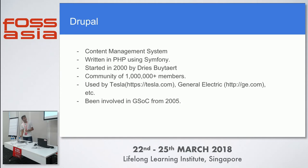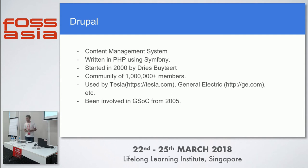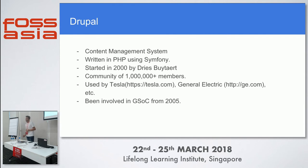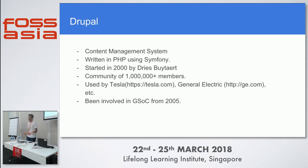Drupal is a content management system started around 2000 by Dries. It was originally written in plain PHP but has since shifted to using Symfony as its core. It has more than one million members and is used by Tesla, General Electric, and various top corporations. Drupal has been participating in Google Summer of Code since 2005 — this would be its 13th edition. Notably, the White House government was using Drupal CMS until the Trump administration changed to WordPress.